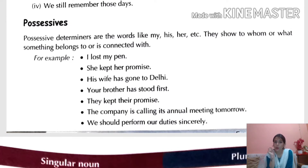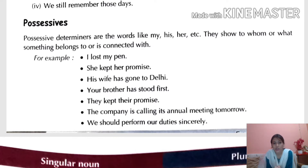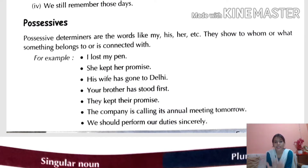Examples: 'I lost my pen' — 'my' is the possessive determiner. 'She kept her promise' — 'her' is the possessive determiner. 'His wife has gone to Delhi' — 'his' is the possessive determiner. 'Your brother has stood first' — 'your' is the possessive determiner. 'They kept their promise' — 'their' is the possessive determiner.